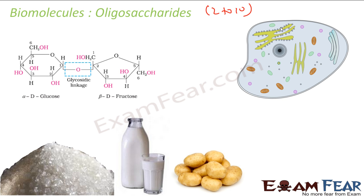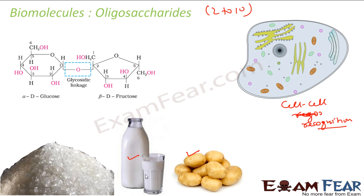Oligosaccharides are found in the cell wall and are used for cell-to-cell recognition — two different cells interact and recognize each other using oligosaccharides. They are also found in milk, in vegetables like potatoes, and in sugar. Examples include sucrose in sugar, maltose in milk, and lactose in milk as well.